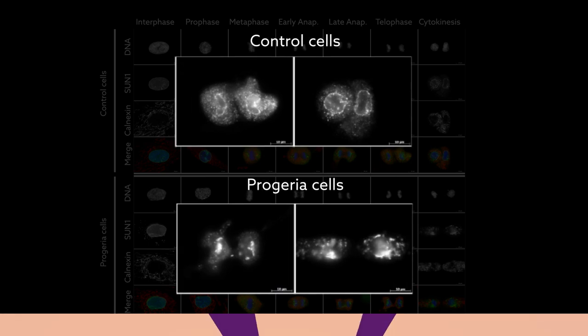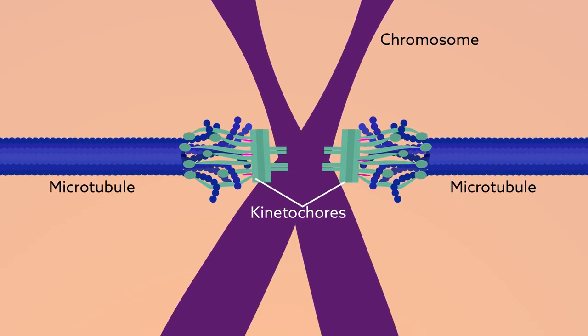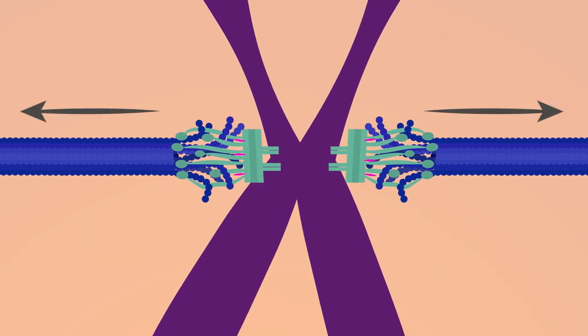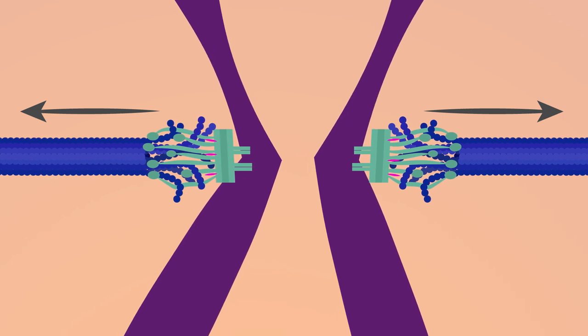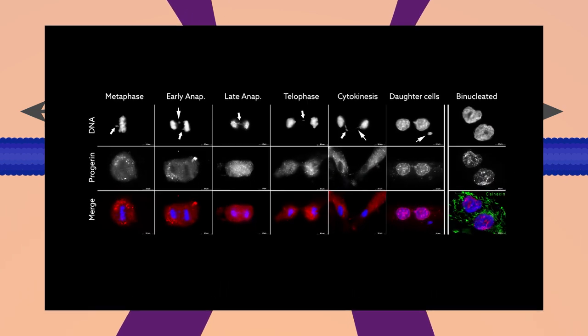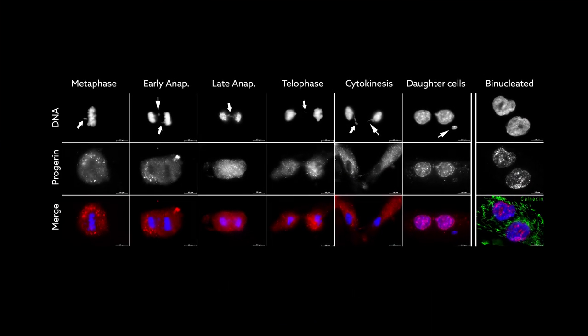Perhaps the most disruptive defect caused by progerin was the displacement of the protein CENPF. This protein enables cellular machinery to pull chromosomes apart during cell division. But in the presence of progerin, the protein is dislodged, causing vital chromosome material to lag behind.